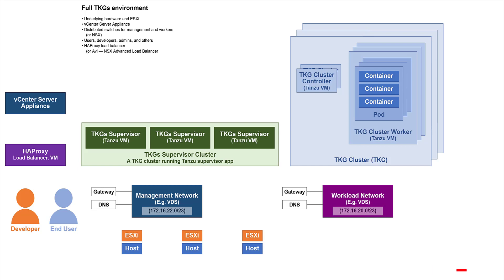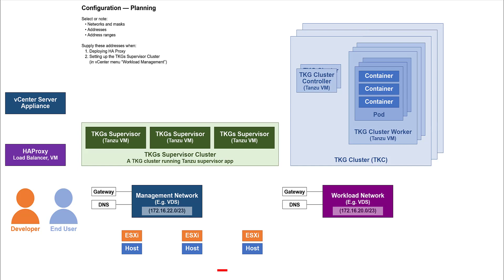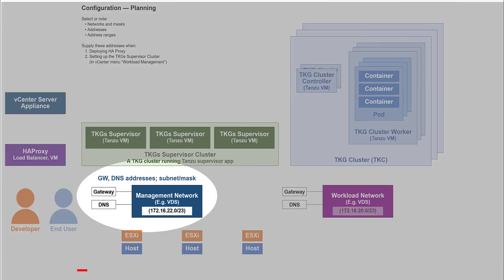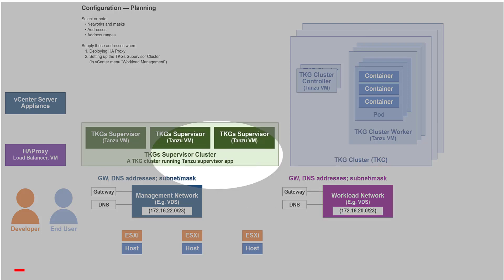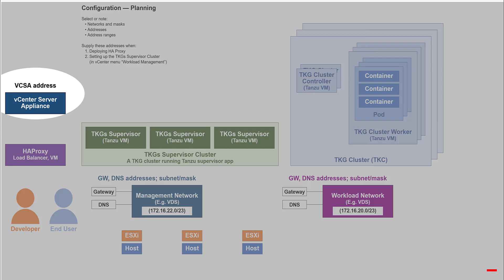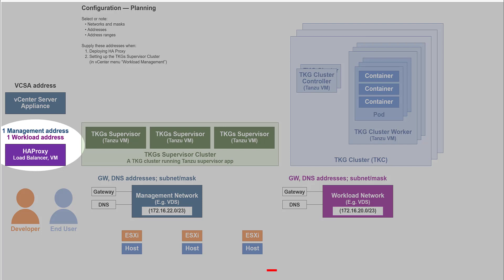The supervisor cluster manages the HAProxy at runtime. To prepare for TKGS network configuration, you need to note or to decide upon several addresses and address ranges. In vCenter, you can navigate to the virtual distributed switch, select your management network, and you can note its gateway, its DNS, and its network address and mask. Next, note the same information for your workload network. Note the address of the vCenter server appliance. The HAProxy appliance, when you deploy it, will need an address on the workload network and another address on the management network, as is done in the Quick Start Guide. You can work with your network admin to choose addresses not already in use. These must be static addresses.